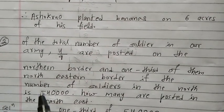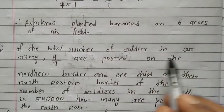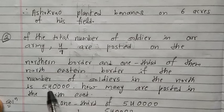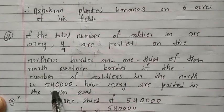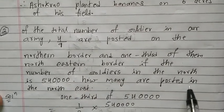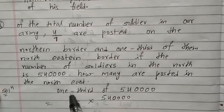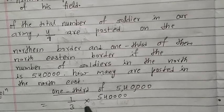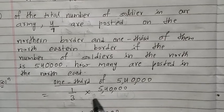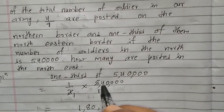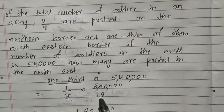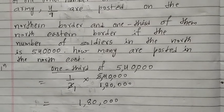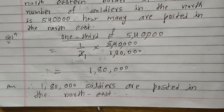Come to question number 3: Of the total number of soldiers in our army, 4 upon 9 are posted on the northern border and one-third of them on the north-eastern border. If the number of soldiers in the north is 5,40,000, how many are posted in the north-east? One-third of 5,40,000 means 1 upon 3 into 5,40,000. Cancel 3: 1,80,000 soldiers are posted in the north-east.